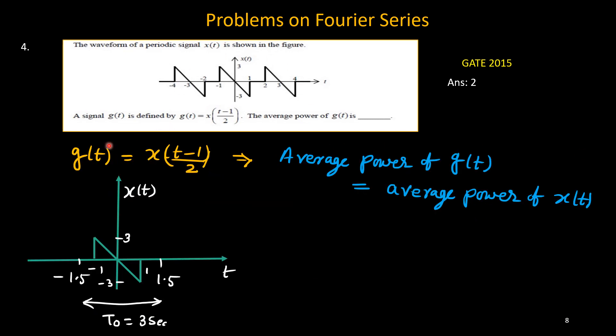Now in this problem, it is given that g(t) equals x of (t minus 1) by 2. That means one time shift, one scaling, both are there. But anyway, the g(t) should have the same power as x(t) because there is no difference for time scaling and time shifting. So we need to compute the average power of x(t) only.